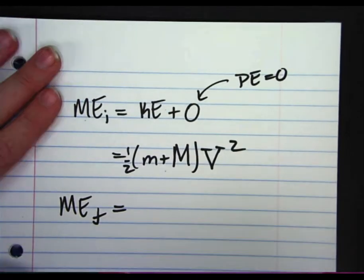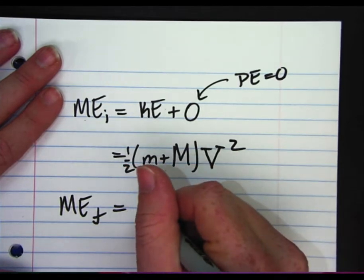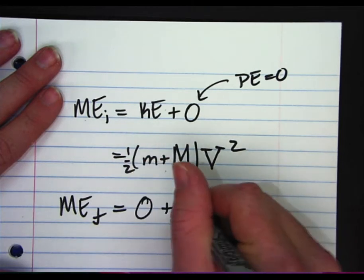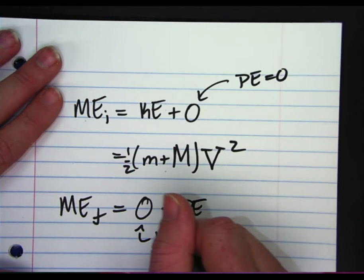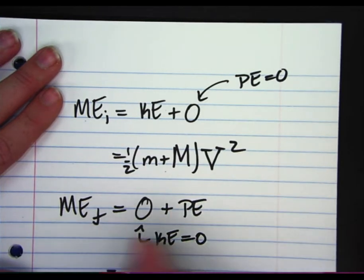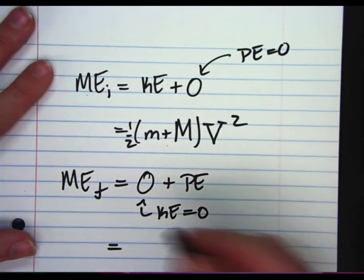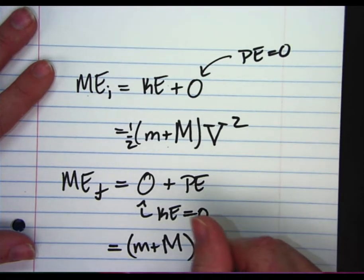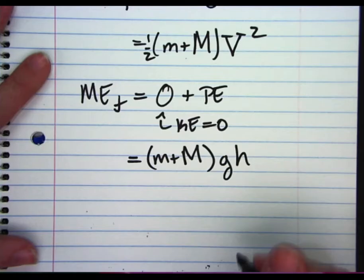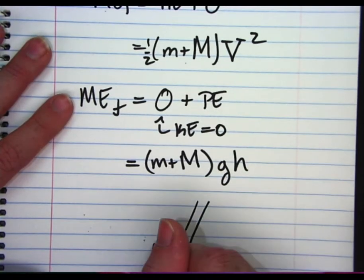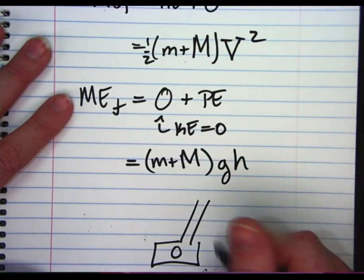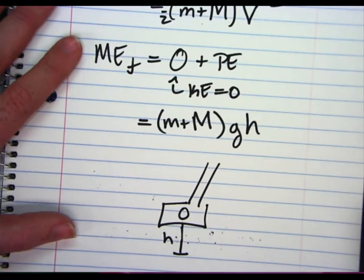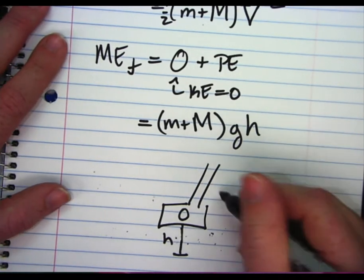The final mechanical energy is when the system is caught on that ratchet. That's MEF — mechanical energy final — which equals zero plus the potential energy, because the energy of motion has become zero and everything has converted to potential energy. That equals (little m plus big M) times g times height, where height is the change in the Y direction for the pendulum arm from its initial hanging position up to its maximum height.